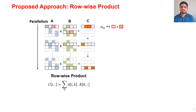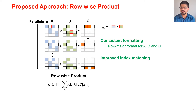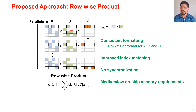The parallelism comes from the fact that different rows of the output matrix C can be produced in parallel. The major advantages of the row-wise product approach are: consistent formatting — all matrices A, B, and C are stored in row-major order — improved index matching, no synchronization required, and medium to low on-chip memory requirements.